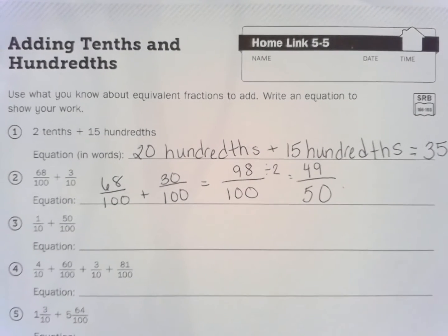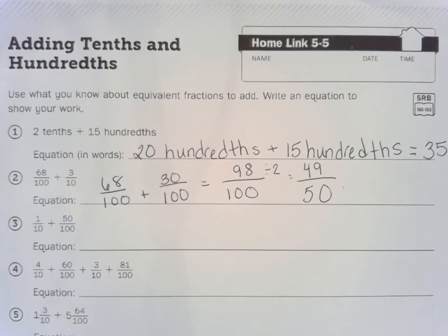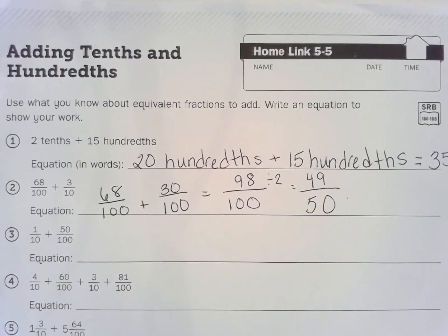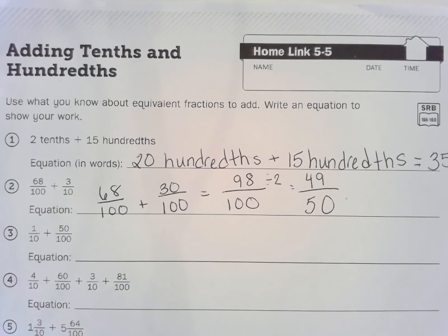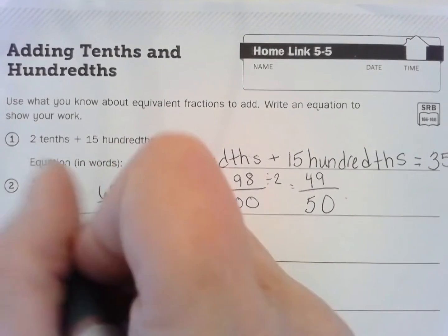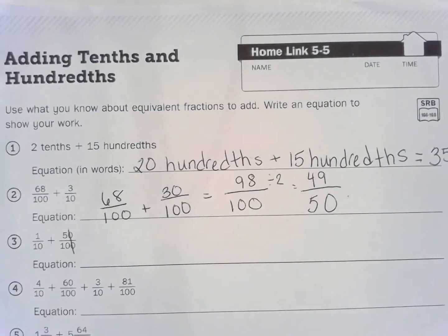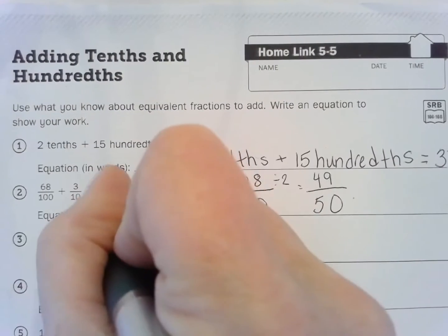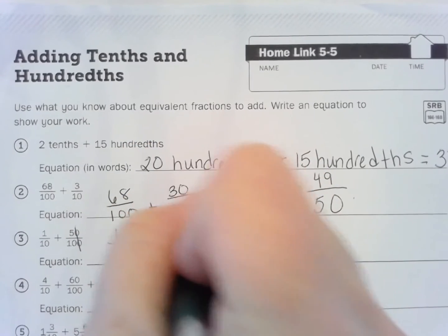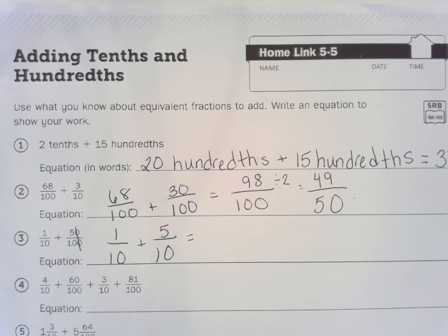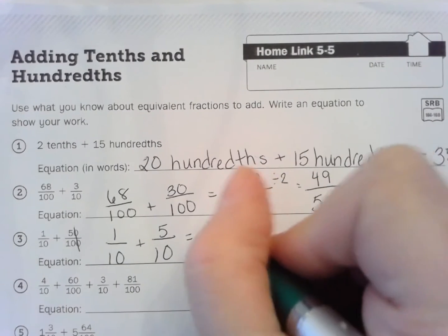So now, number 3, 1 tenth plus 50 hundredths. Oh look, 50 hundredths. That one, we can actually simplify 50 hundredths and make it tenths and do our equivalent fractions that way. Because 50 hundredths, if we just divide them both by 10, get rid of the zeros, that's 5 tenths. So our equation this time is 1 tenth plus 5 tenths, equals 1 tenth plus 5 tenths, that equals 6 tenths.